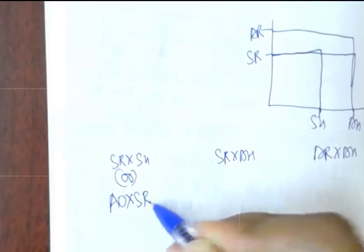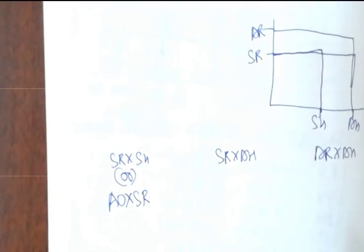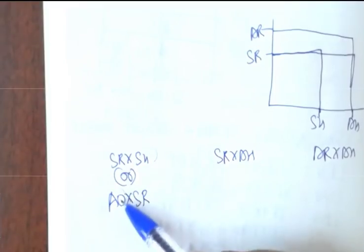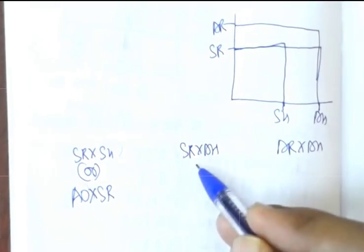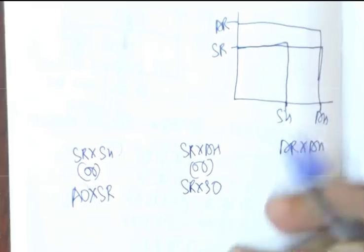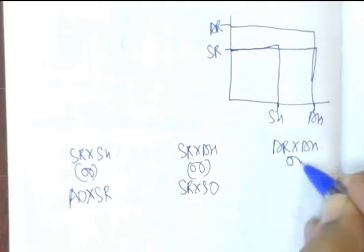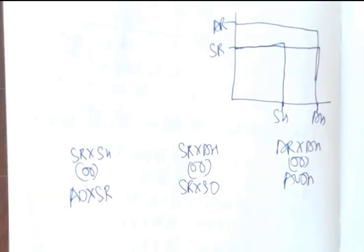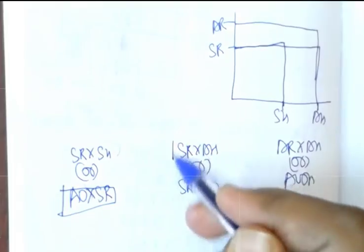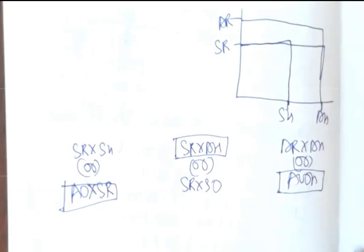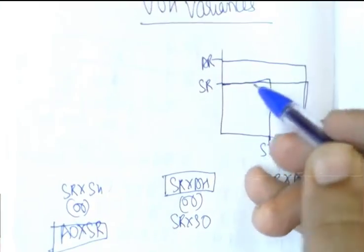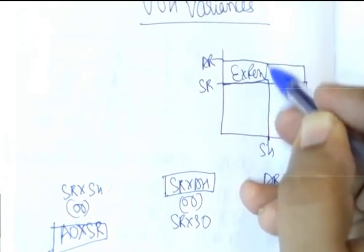SR × SH is otherwise called as AO × SR — actual output × standard rate per unit. This is a conversion factor because SH is always calculated with the help of AO. SR × AH is otherwise called as SR × SO — standard rate × standard output. AR × AH is nothing but actual variable overhead. So the table reads: AO × SR, SR × AH, AVOH.